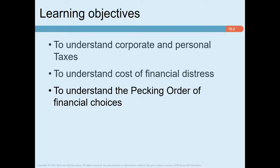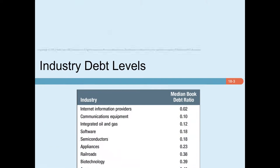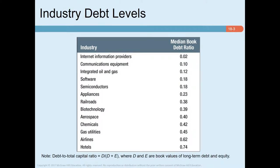In Chapter 17, we found that debt policy rarely matters in a perfectly functioning capital market with no frictions or imperfections. Few financial managers should accept that conclusion as a practical guideline — if debt policy doesn't matter, they shouldn't worry about it. Yet financial managers do worry about debt policy. In this chapter we explain why. If debt policy were completely irrelevant, actual debt ratios should vary randomly from firm to firm and industry to industry.